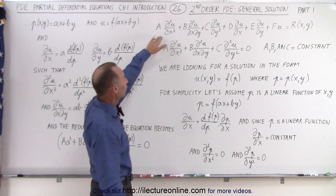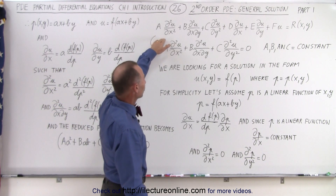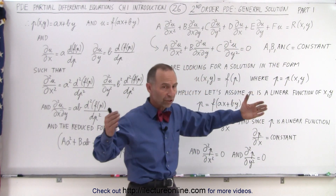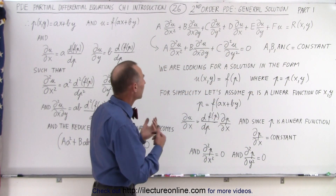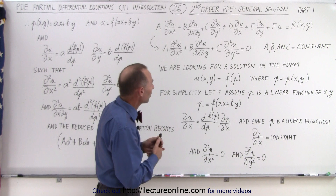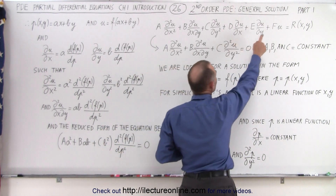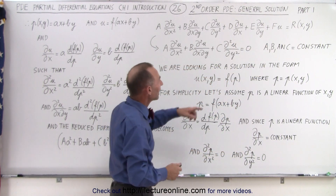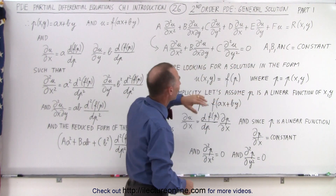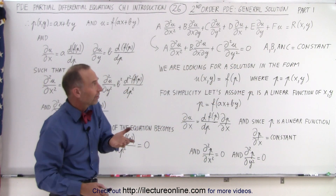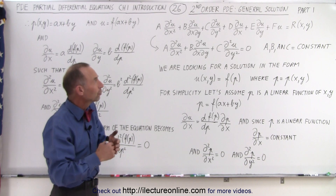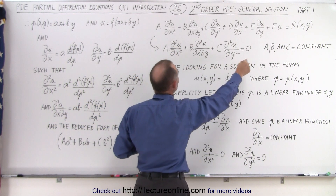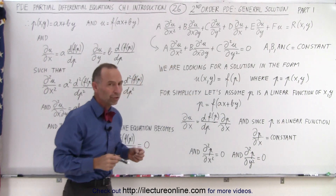We start with our second-order partial differential equation, which we'll probably never actually use because it's such a complicated equation. We're going to simplify things by letting d, e, and f go to zero, and by letting a, b, and c be constants, and in this case we're going to let the right side, r of x and y, go to zero as well. So we end up with this very simplistic form of the second-order partial differential equation.